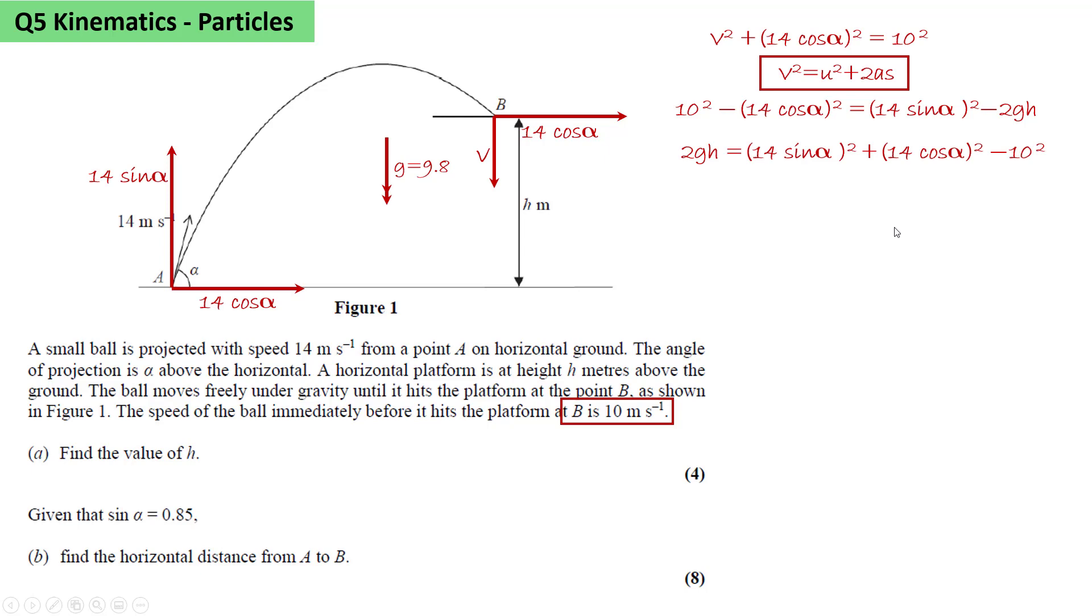We rearrange it. And we see we have 14 sin alpha all squared plus 14 cos alpha all squared. Using sin squared plus cos squared equals 1, we know that these two will add up to 14 squared. So we get 2GH equals 14 squared minus 10 squared. You can use the difference of two squares, 14 plus 10 times 14 minus 10. And we get H equals 48 over G, which equals 4.9.